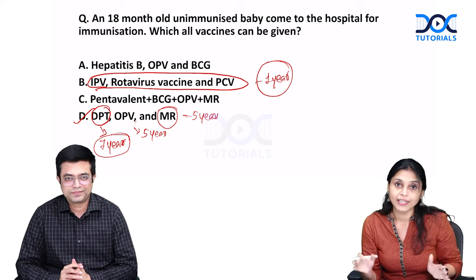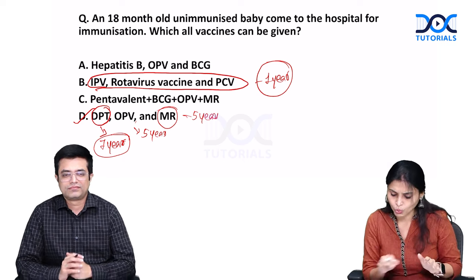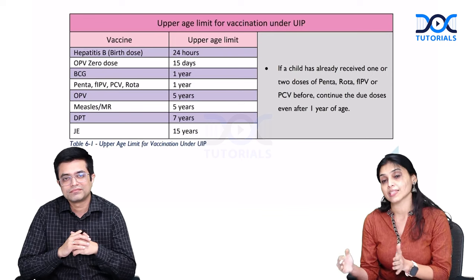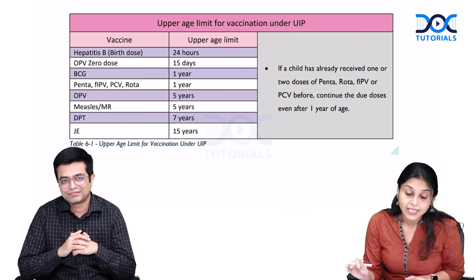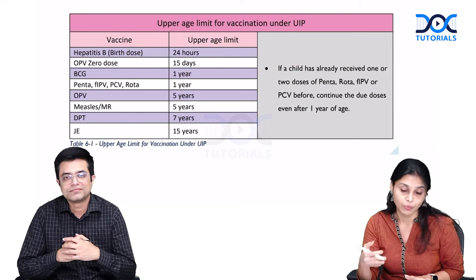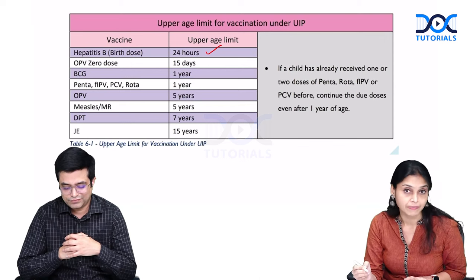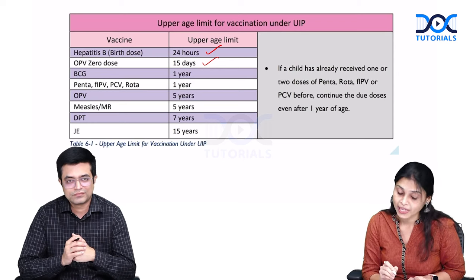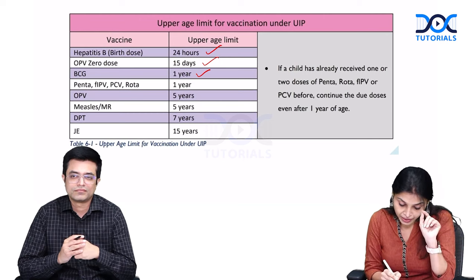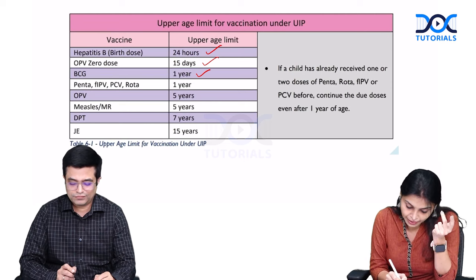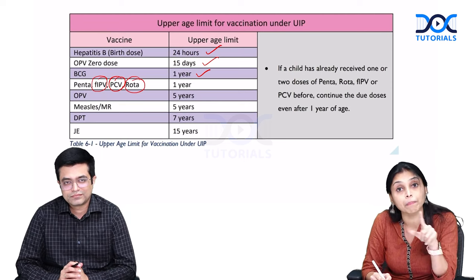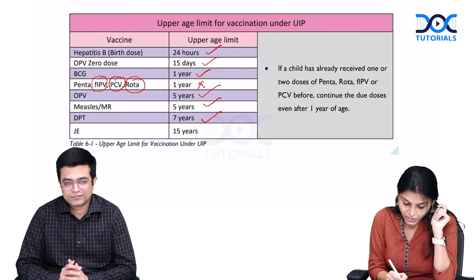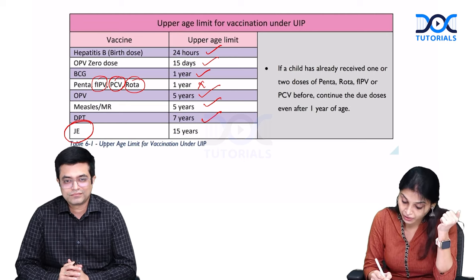Here is the take-home table. Hepatitis B birth dose can be given only up to 24 hours. OPV zero dose only up to 15 days. BCG only up to one year. Penta, IPV, PCV, and Rota cannot be given beyond one year. OPV up to five years, MR up to five years, DPT up to seven years, and JE - where endemic - can be given up to 15 years.